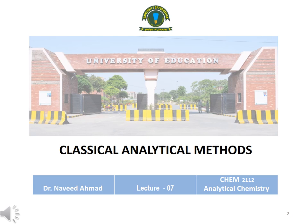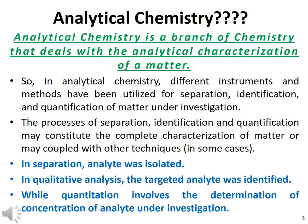After identifying these elements in a given sample, quantitative analysis is also used to calculate the concentration of the targeted analyte. Before starting classical analytical methods, we will discuss what is analytical chemistry. Analytical chemistry is a branch of chemistry that deals with the analytical characterization of matter.